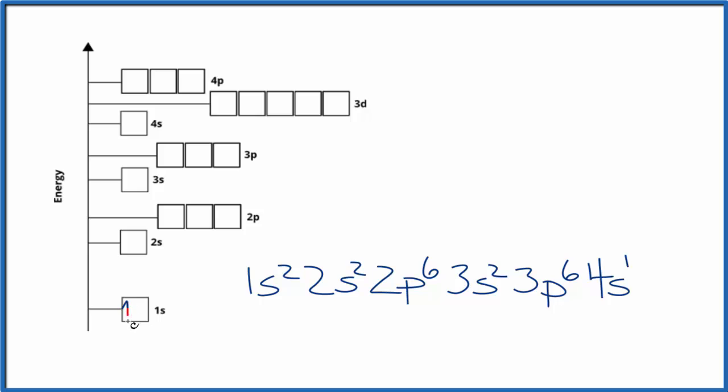So we have electron configuration, or we could do the orbital diagram to show that. So we have 1s², we put them in opposite directions, 2s², 2p⁶. We spread them out first in the p orbitals and then double them up. We have 3s², 3p⁶, and we end up with 4s¹. So this is the atomic orbital diagram for potassium.